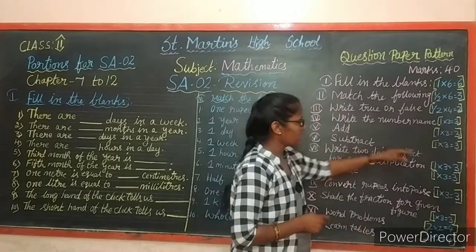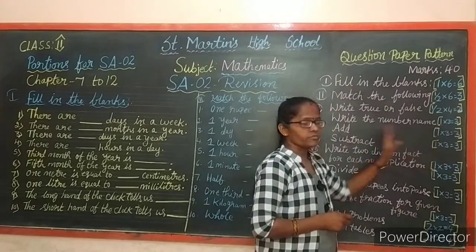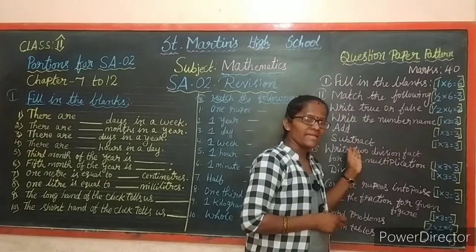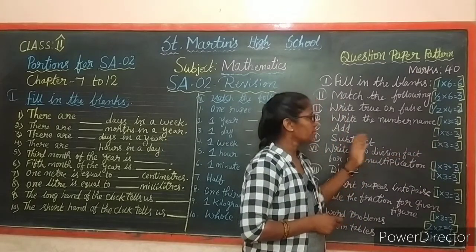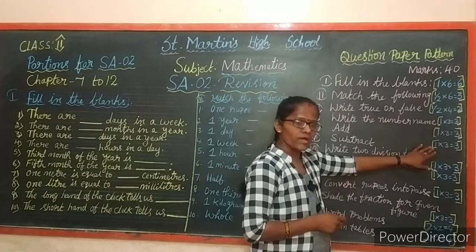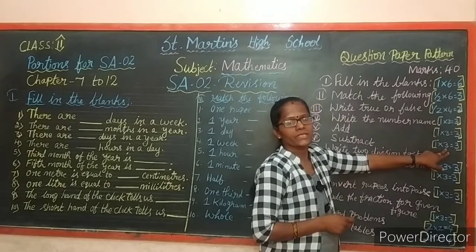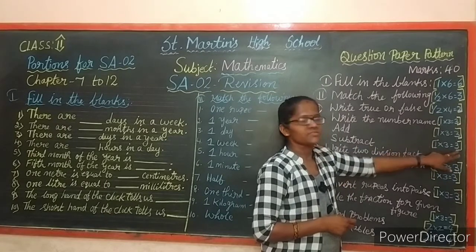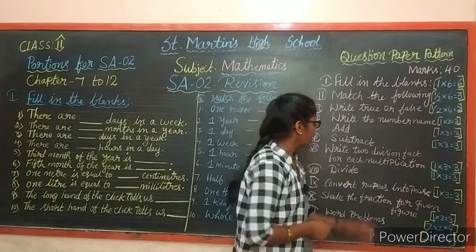Next, subtraction - you have to minus the numbers. Each carries 1 mark, 3 subtraction sums will be given, totaling 3 marks.